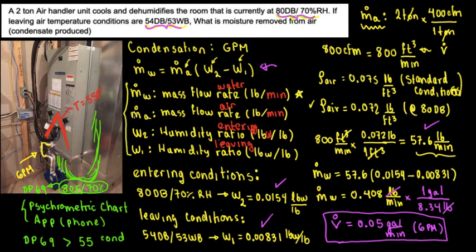To summarize: the main formula gives condensation GPM. We used entering and leaving conditions for the humidity ratios, calculated the mass airflow rate from the tonnage-based CFM and the corrected air density at entering conditions, and applied the conversion factor to get GPM. I hope you enjoyed this video — if you did, hit the like button, subscribe, and share. Have a good one!